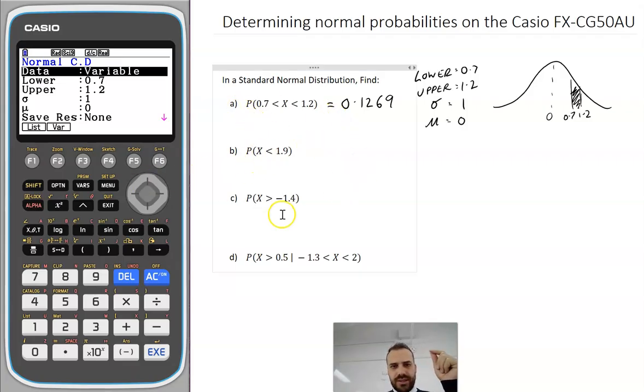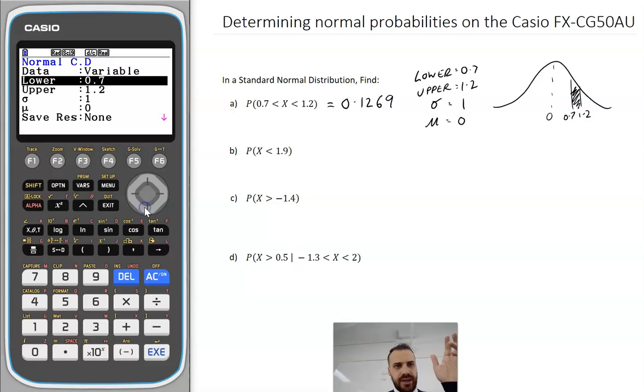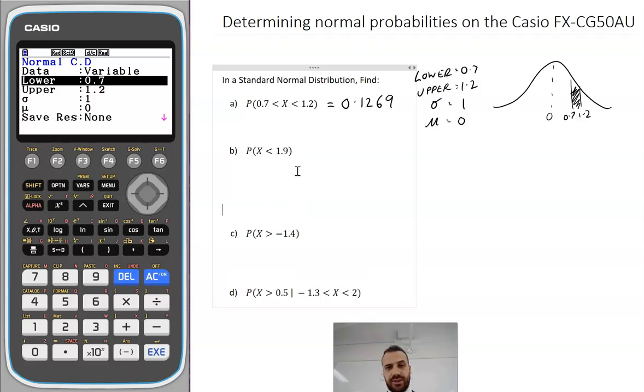Now these next two, we're just going to do them in the same kind of way. Again, we're in our stat mode. Probability that X is less than 1.9. I'm going to draw my sketch first for you this time, which is something that you might get asked to do on like a free exam or something.